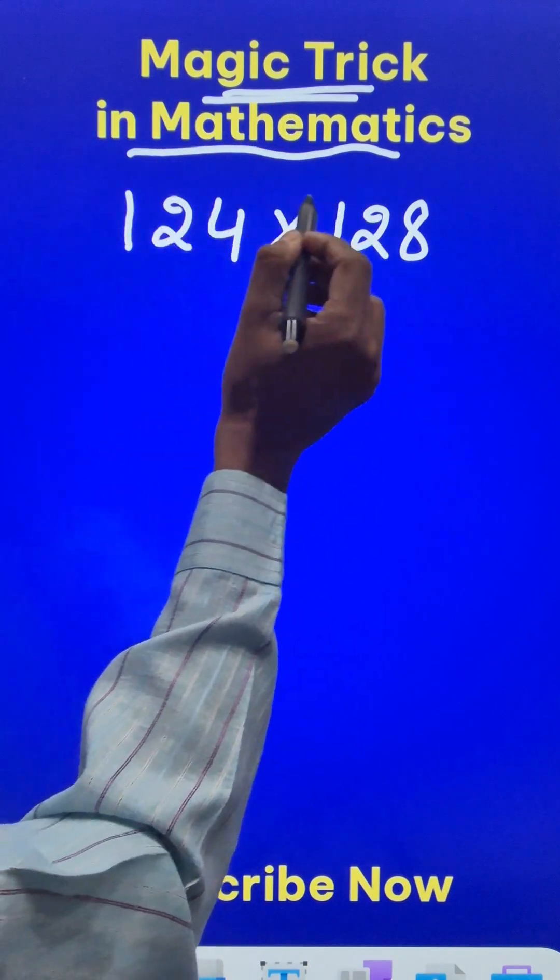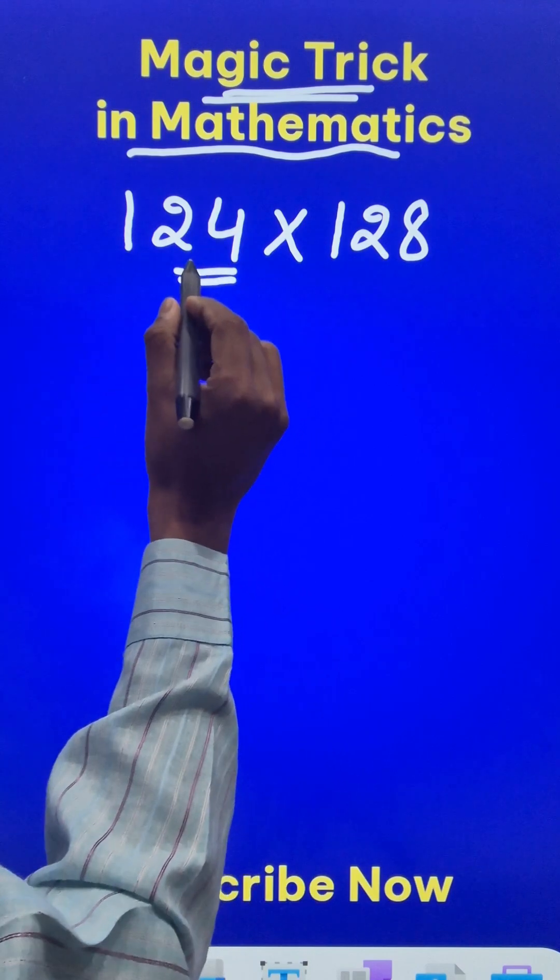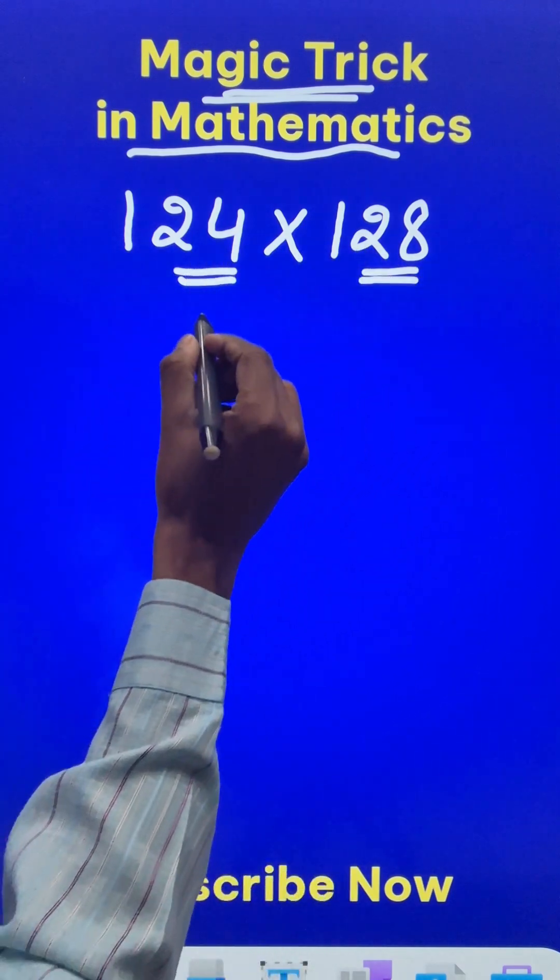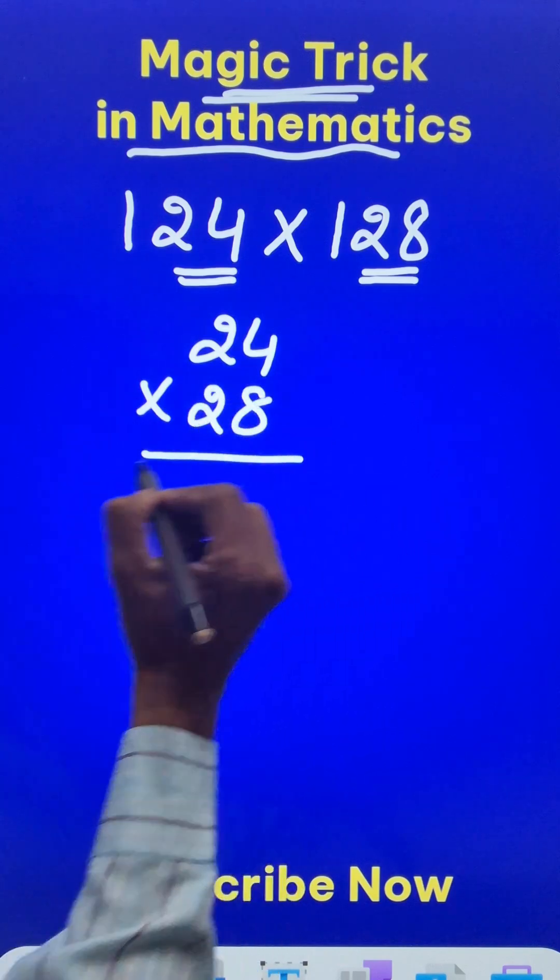Now, both the numbers are in 100s, right? So this is 24 more than 100, this is 28 more than 100. So first thing I am going to do is to multiply 24 and 28 using the vertically and crosswise.